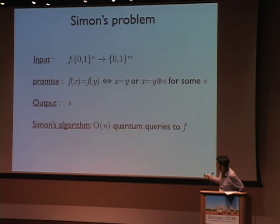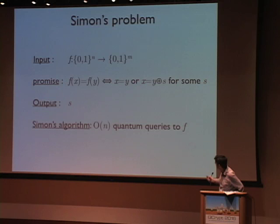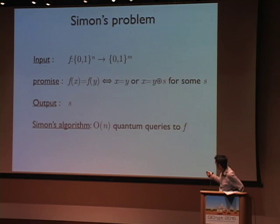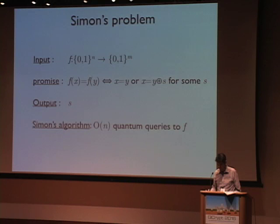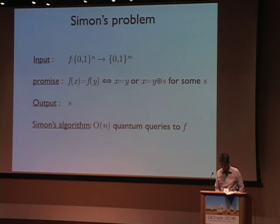Let me remind you what Simon's problem is. Suppose the input to the problem is a function F. There is a promise that if you take some input X, and look at F(X) and F(X ⊕ S) for some hidden S, the function will have the same value on both X and X ⊕ S. It's an if-and-only-if: the function has this period S, and the value is the same if and only if the two inputs differ by exactly S. The goal of the problem is to recover the value S. Simon's algorithm solves this problem using a linear number of queries.